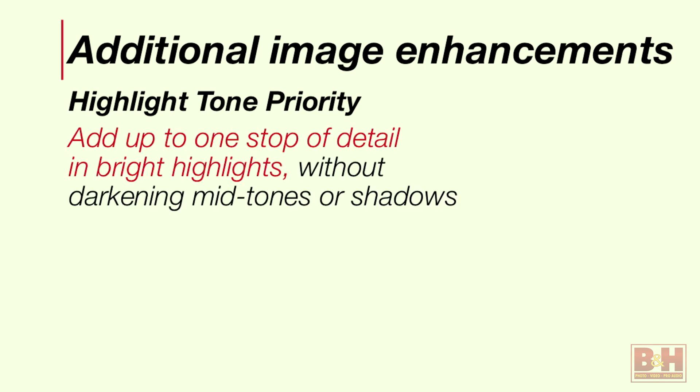One I like to talk about a lot is Highlight Tone Priority — a tool that, whether you shoot RAW or JPEG, can give you up to an additional stop of detail in your bright highlights without changing your mid-tones or shadows. If you're in a brightly lit situation — a classic example is a bride in a white wedding dress on a sunny day — even when shooting RAW there's a finite limit to how much blown-out detail you can recover. Highlight Tone Priority gives you a bit of a safety net.